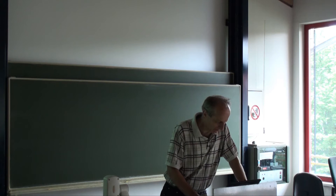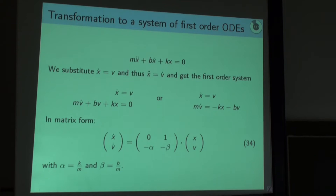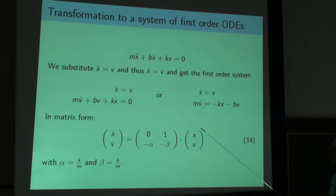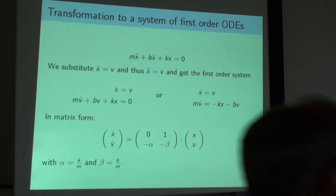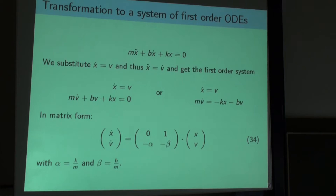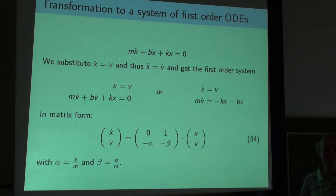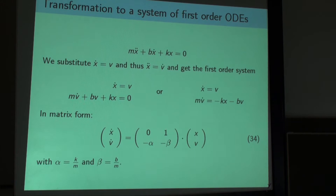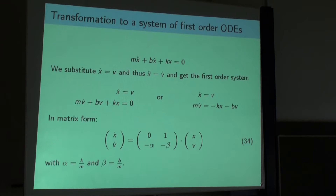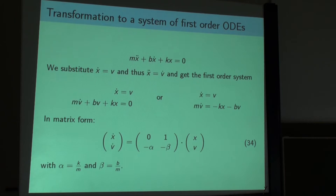We are in the middle of solving linear differential equations - actually not equations but systems of equations. We were talking about systems of coupled linear differential equations of first order. Such a system has just the derivatives on the left-hand side, and on the right-hand side a matrix times the vector. This is obviously linear.